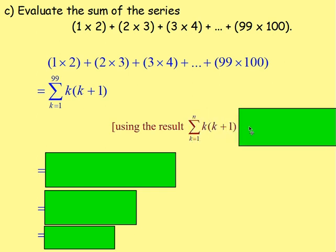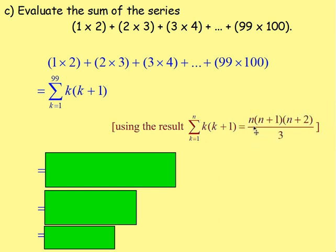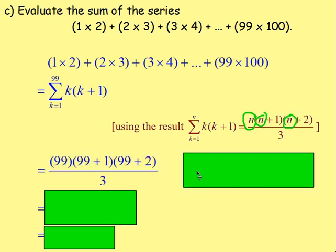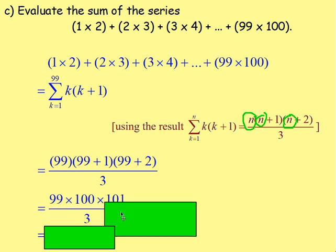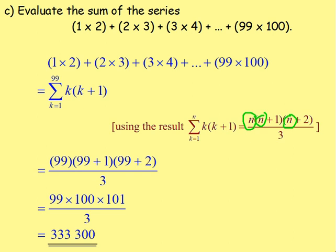From Part B, we know the sum of k(k+1) from k equals 1 to n equals n(n+1)(n+2) all over 3. Here we simply replace n with 99, giving 99 times 100 times 101 all over 3. Working that out: 99 times 100 is 9900, times 101 is 999,900, divided by 3 gives an answer of 333,300.